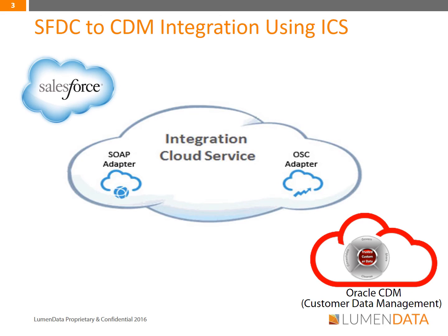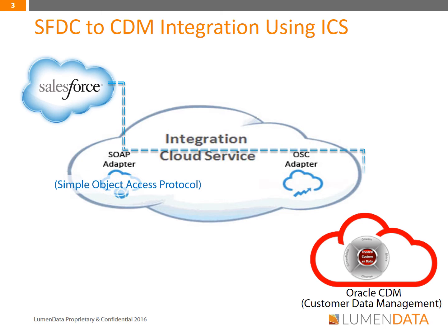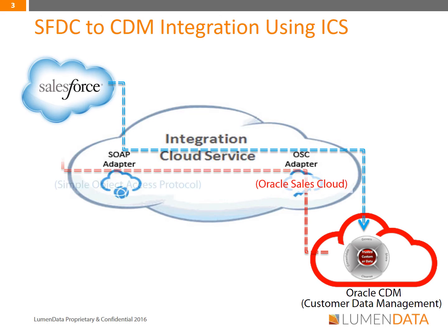In this demonstration, we will show you how a 360-degree view of the customer is achieved in a Salesforce.com environment that uses Oracle ICS to connect to Oracle CDM. We'll cover two use cases: match, fetch, and update. On the screen, we have three cloud components — Salesforce.com, Oracle CDM, and Oracle Integration Cloud Service — which is used for integrating master data between them. In ICS, the SOAP adapter is used to integrate with Salesforce.com, and the Oracle Sales Cloud Adapter is used to integrate with Oracle CDM, enabling bidirectional integration.